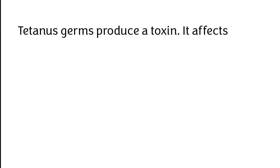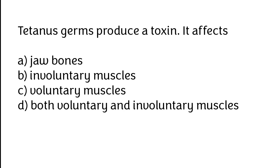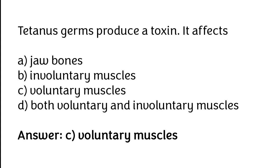Tetanus germs produce a toxin that affects: A) Jaw bones, B) Involuntary muscles, C) Voluntary muscles, D) Both voluntary and involuntary muscles. The correct answer is option C — tetanus germs produce a toxin that affects voluntary muscles.